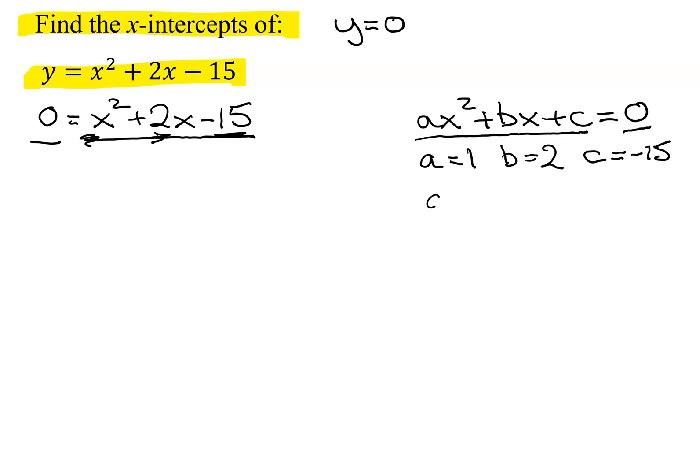Let's see if this will factor. a times c is 1 times negative 15, which is negative 15. So I need two numbers that multiply to ac, my negative 15, and they have to add to the b term, which is positive 2.